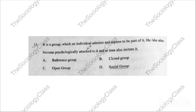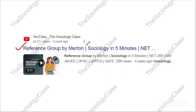Question number fifteen: 'It is a group which an individual admires and aspires to be part of. They also become psychologically attached to it and at times imitate it.' The options are reference group, closed group, open group, social group. The correct answer is A — reference group. I have already taught this in a three-minute video. Reference group is a topic from which questions always come — they ask about its meaning and which book it appears in.